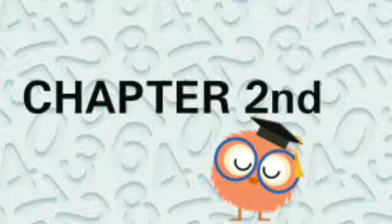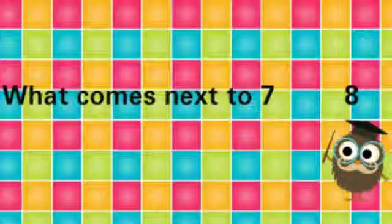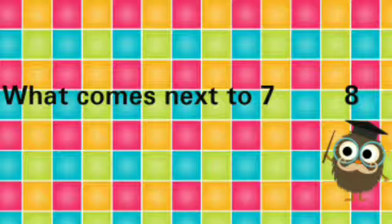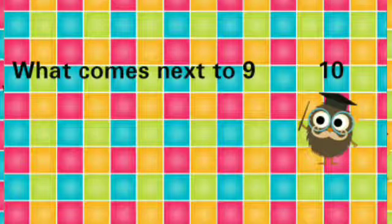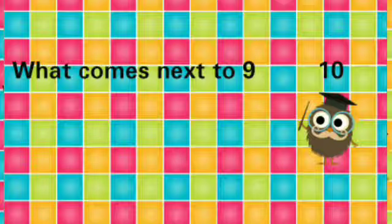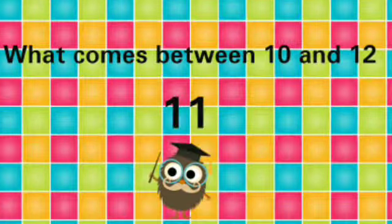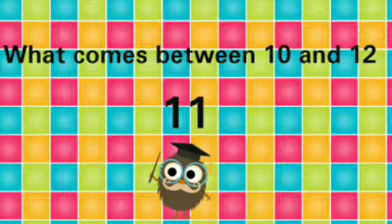Let's start. Addition up to 20. Warm up. First is, what comes next to 7? Answer is 8. Second is, what comes next to 9? Answer is 10. Third, what comes between 10 and 12? Answer is 11.